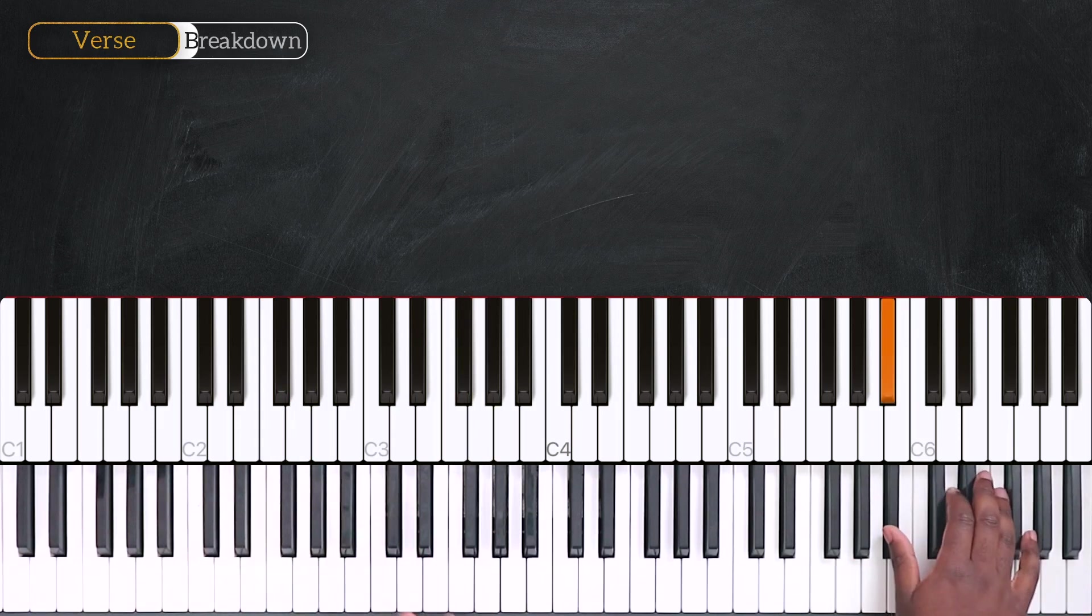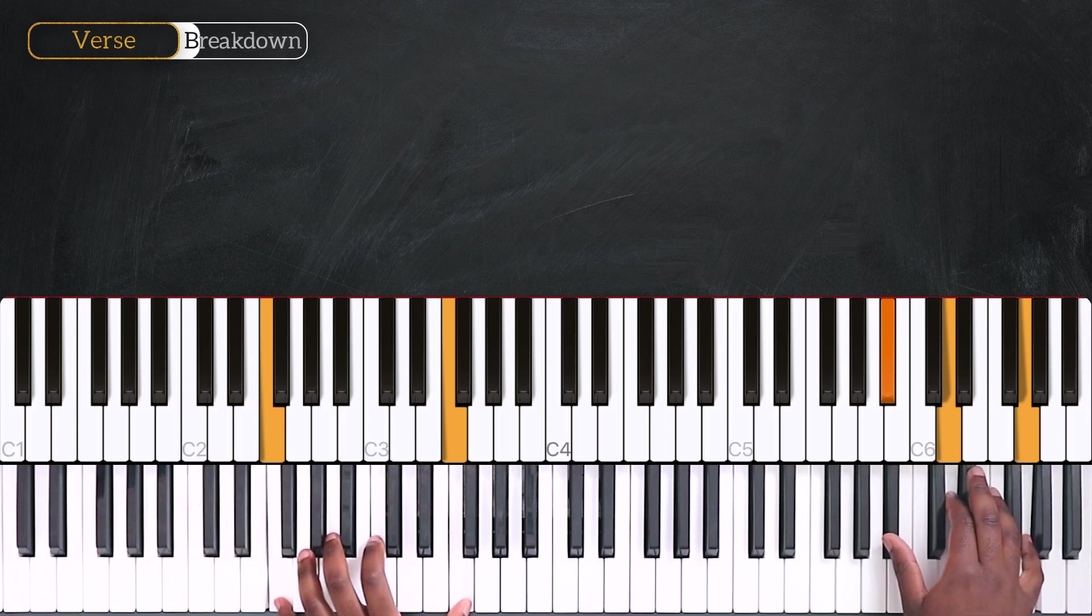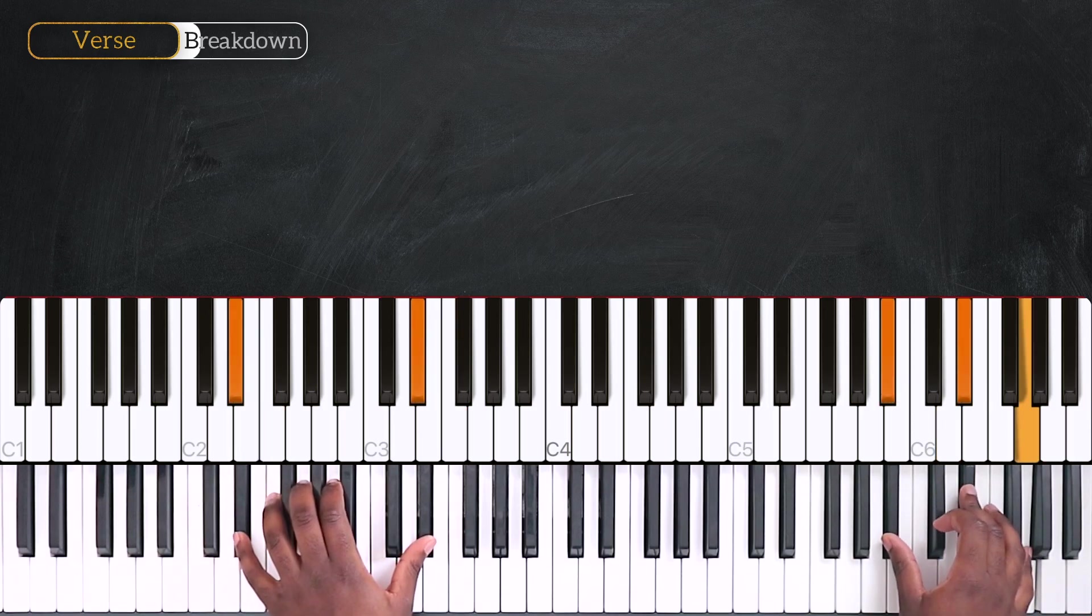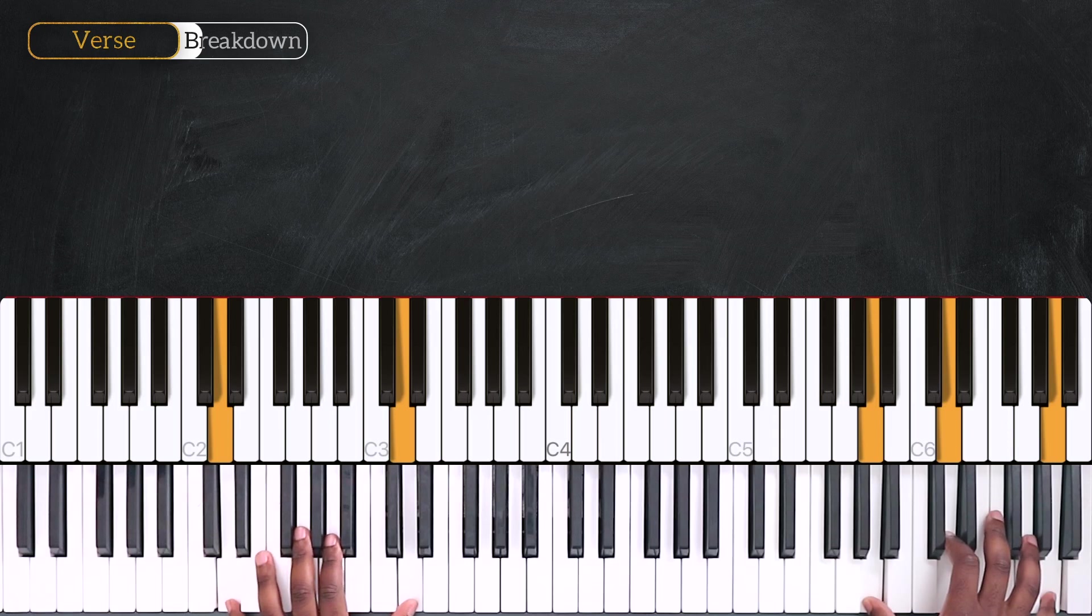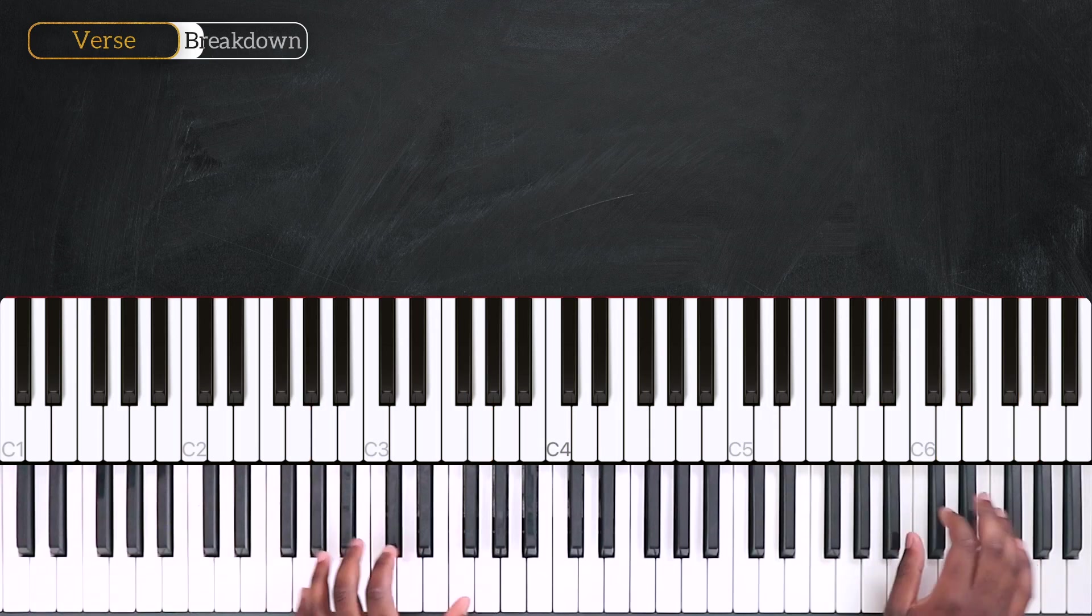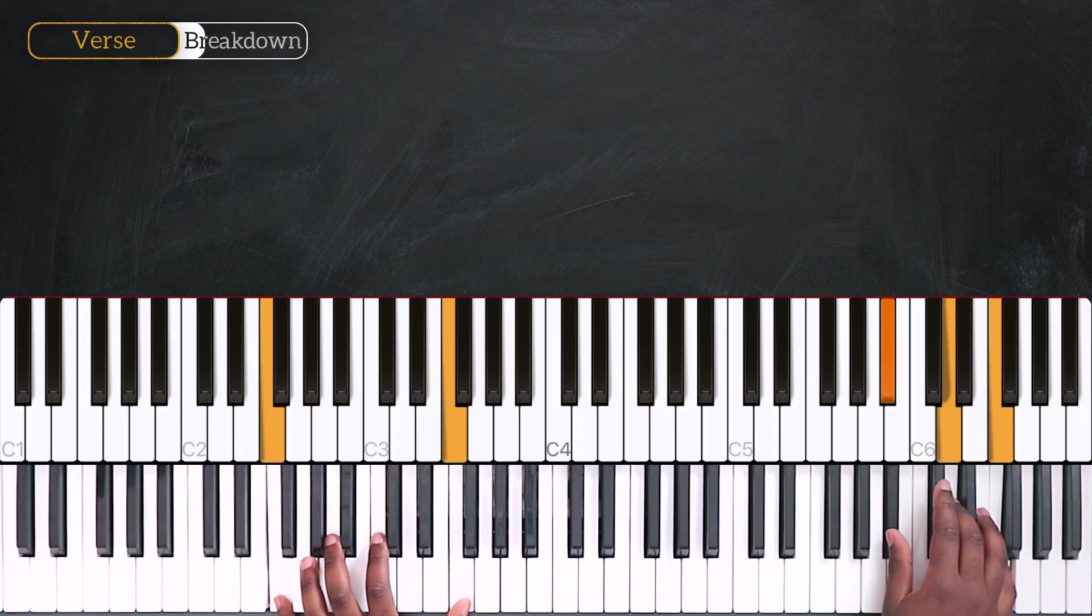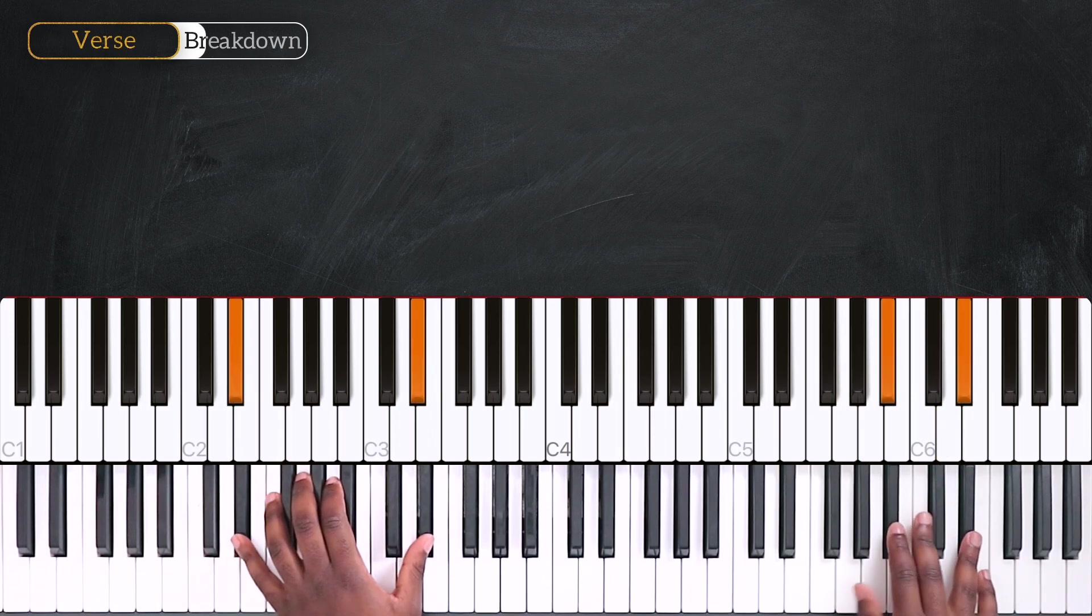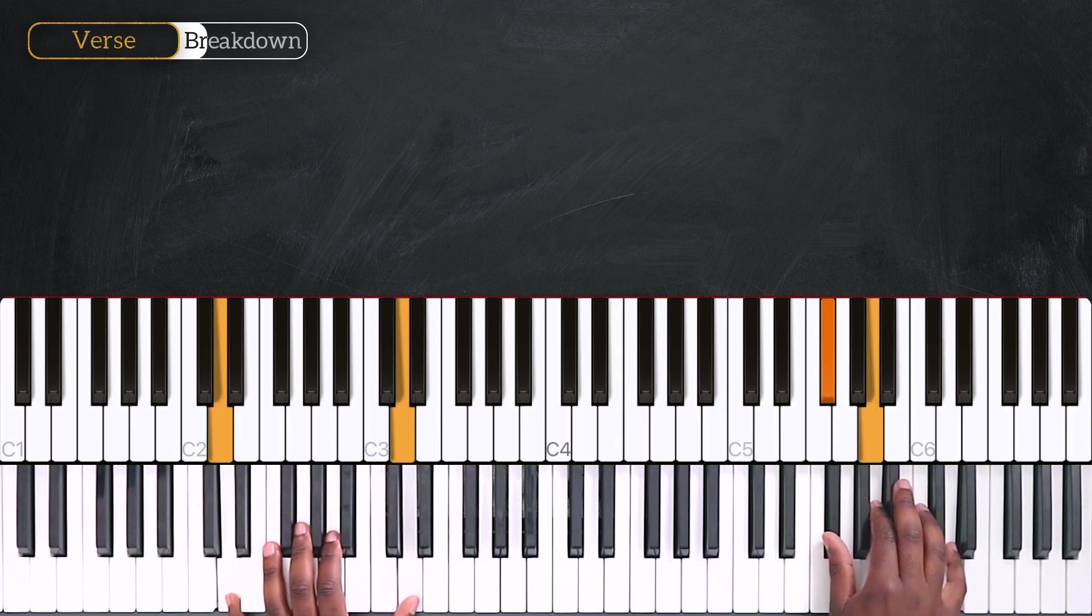And for the right hand, we have Bb, D, and G for G, F. On Eb, we're playing Bb, Eb, and G. And for D, we have A, D, and A. Okay. Then we're going to repeat with Bb, D, and G. Now playing over F, Bb, D, and F. Over Eb, G, Bb, Eb, and over D, Gb, A, and D.